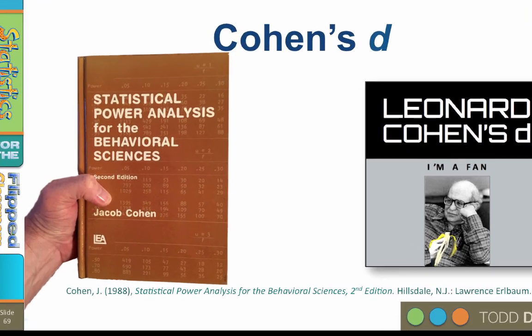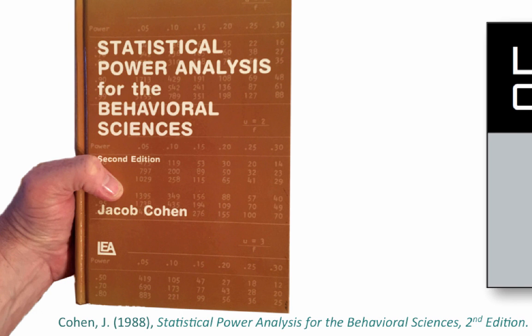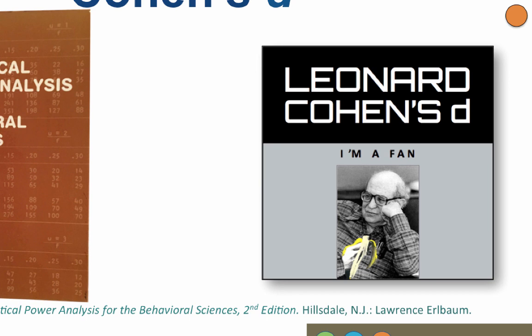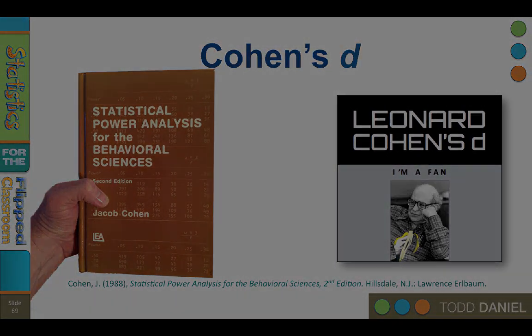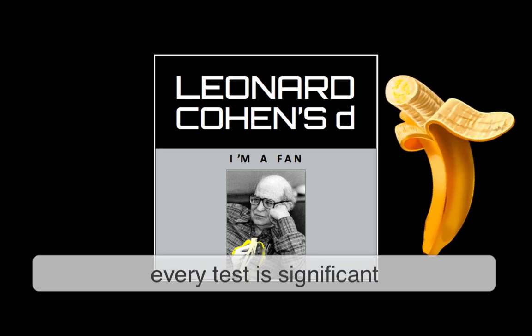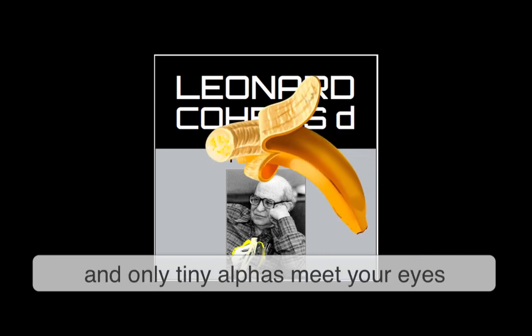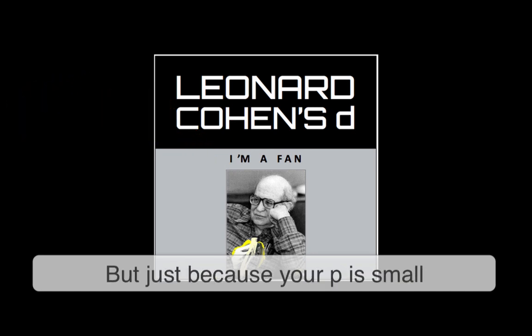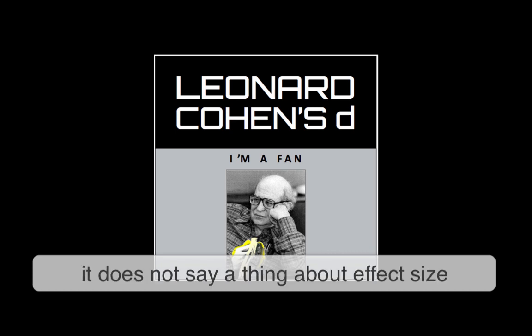Jacob Cohen, in his 1988 book Statistical Power Analysis for the Behavioral Sciences, gave us a measure of effect size that we now call Cohen's D. This is the album cover to my band's single, Leonard Cohen's D — our song about Jacob Cohen's D to the tune of Leonard Cohen's Hallelujah. I've heard that when your N is big, every test is significant, and only tiny alphas meet your eyes. But just because your P is small, that may not mean a thing at all. It does not say a thing about effect size.